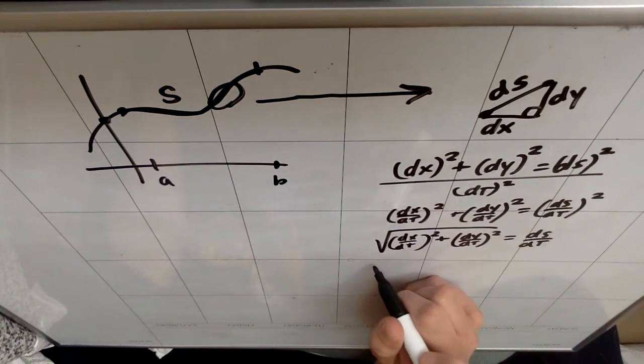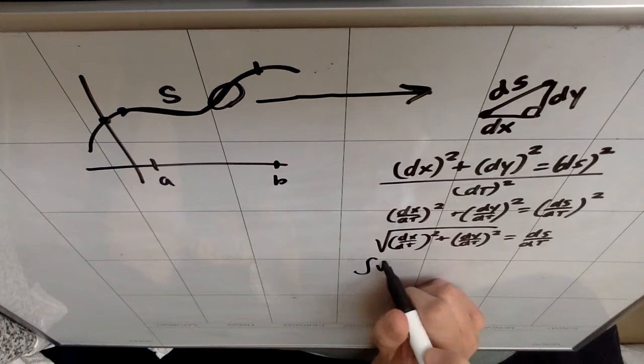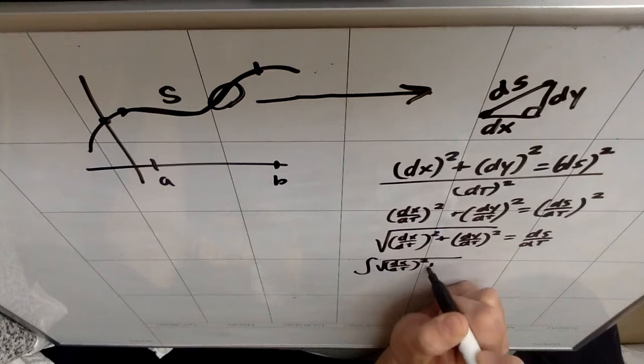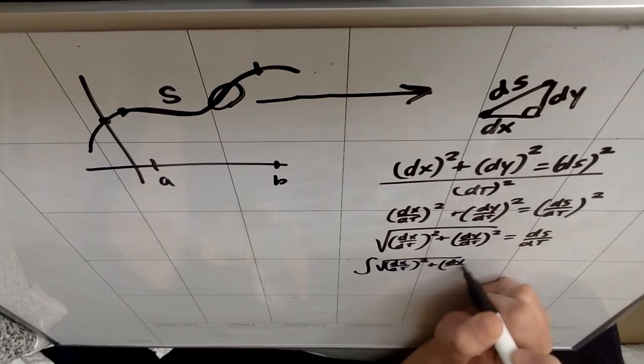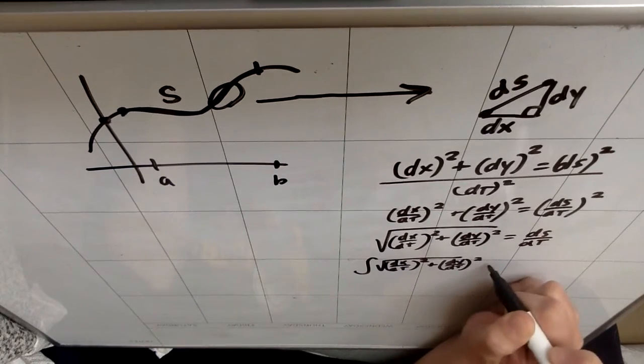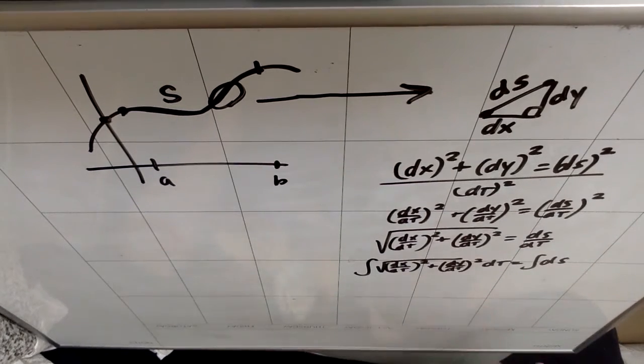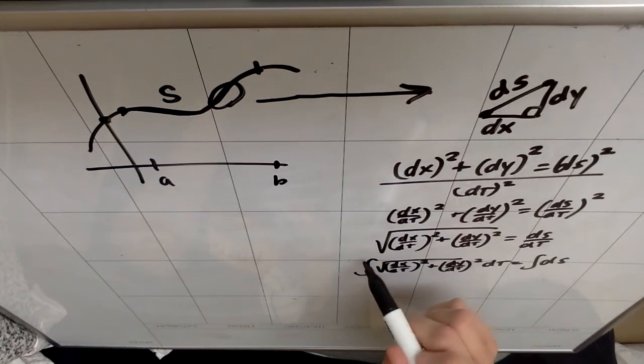I could write this as the integral of the square root of (dx/dt)² plus (dy/dt)² with respect to t, which is the same as my integral of ds. Right in that little spot is my formula for arc length.